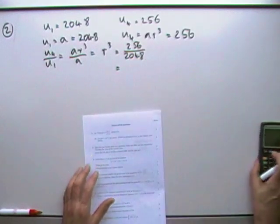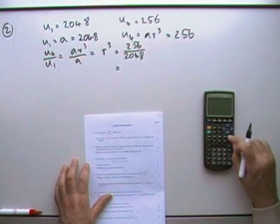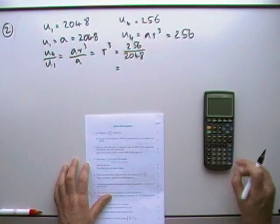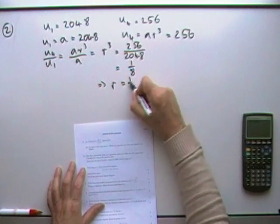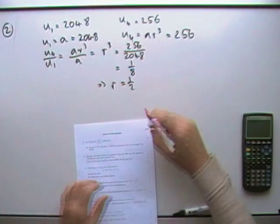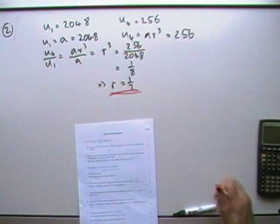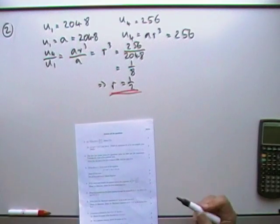Or you could divide that out in your calculator. 256 divided by 2048 gives you 1/8. Which means R is going to be the cube root of that, which is 1/2, and it maintains the same sign being an odd root. Now that was the first bit, two marks. A is 2048, R is 1/2.